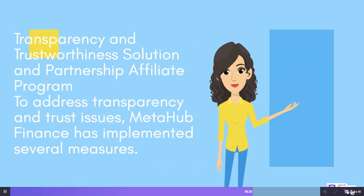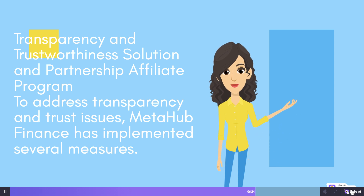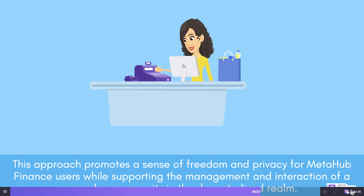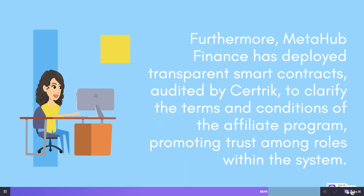Transparency and Trustworthiness Solution. To address transparency and trust issues, MetaHub Finance has implemented several measures. This approach promotes a sense of freedom and privacy for MetaHub Finance users while supporting the management and interaction of a complex community in the decentralized realm. Furthermore, MetaHub Finance has deployed transparent smart contracts, audited by Sertrack, to clarify the terms and conditions of the affiliate program, promoting trust among roles within the system.